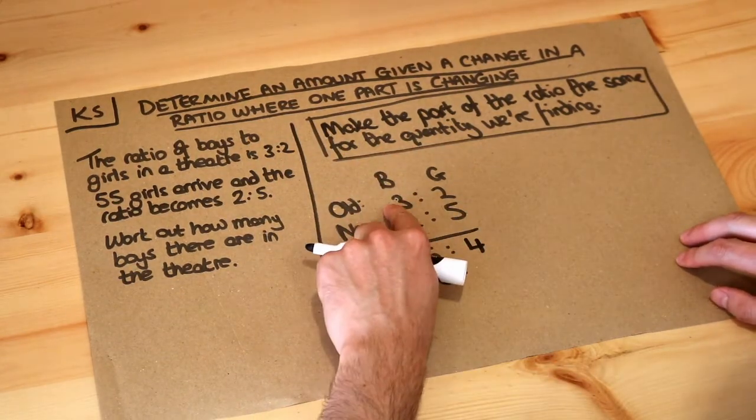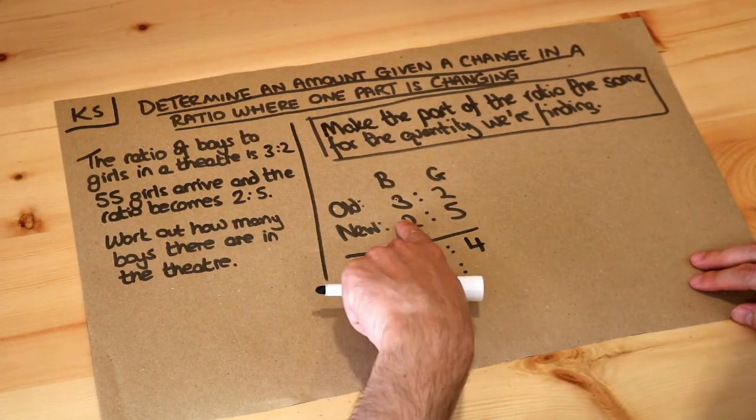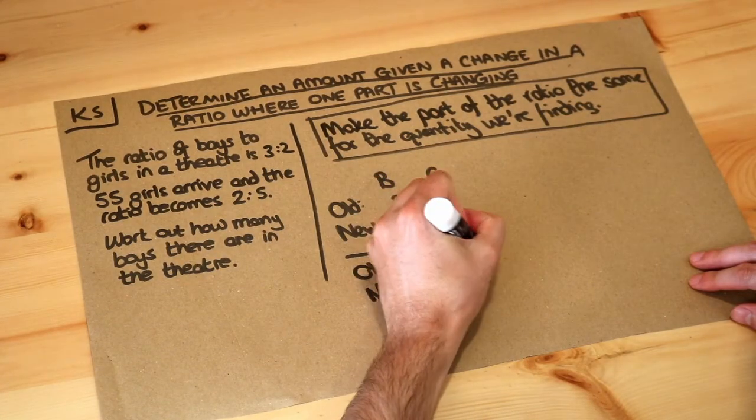Remember whatever you do to one thing in the ratio you have to do the same to the other. If you times this by 3 you have to times that by 3. And then that 2 is becoming 6, you've timesed it by 3, so the 5 you have to times by 3 to get 15.